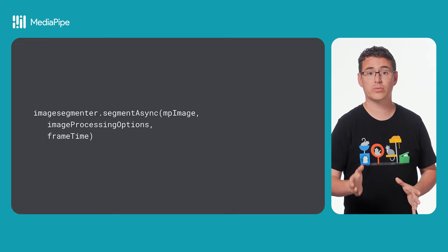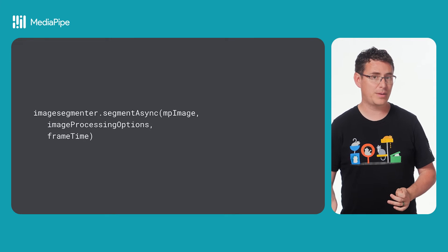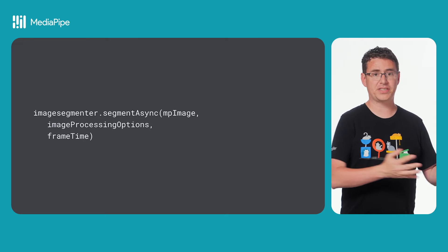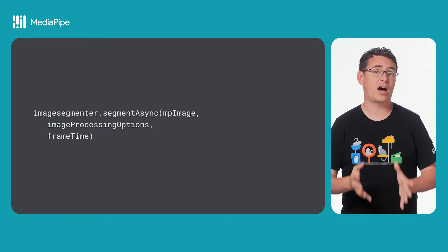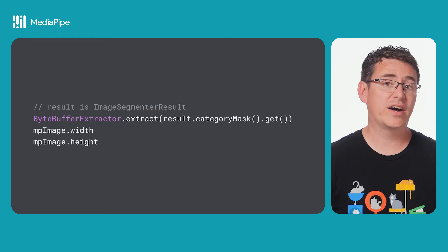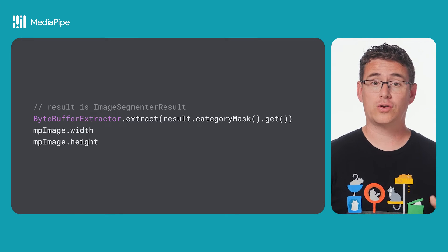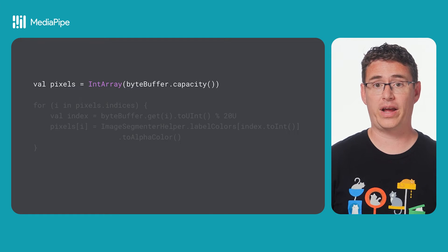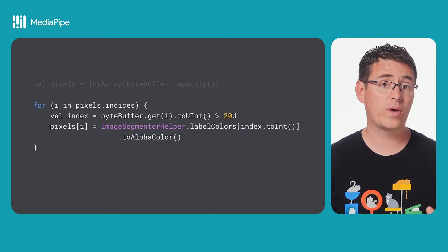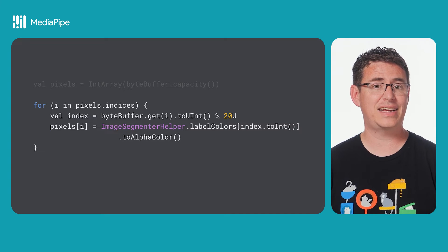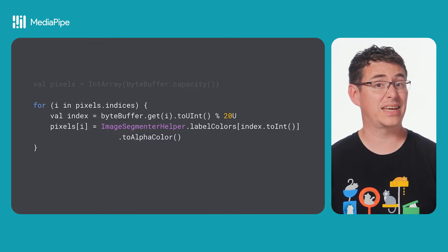This will return an image segmenter result that contains another MediaPipe image, which you can use to extract a byte buffer, along with the image height and width. Once you have those values, you can turn the byte buffer into an integer array, grab the dominant category for each pixel in that array, and then store a color representing that category, which in this case is being stored in the same array to save on memory.